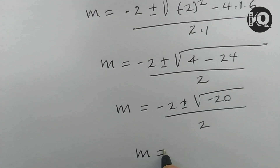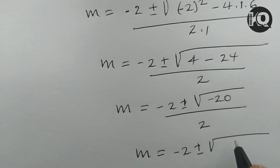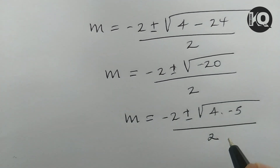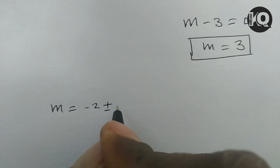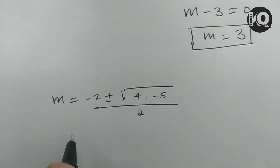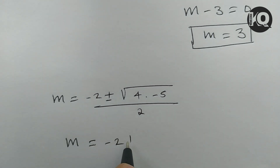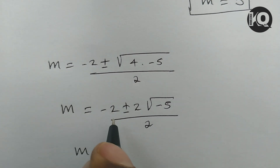We can write minus 20 as 4 times minus 5. So m equals minus 2 plus or minus the square root of 4 times minus 5, divided by 2. The square root of 4 is 2, giving m equals minus 2 plus or minus 2 times the square root of minus 5, divided by 2. Simplifying, m equals minus 1 plus or minus the square root of minus 5.